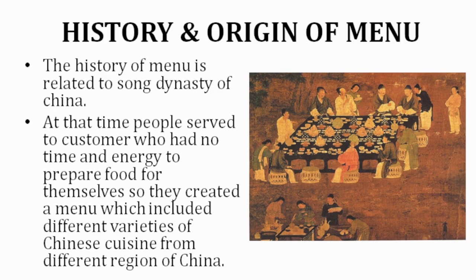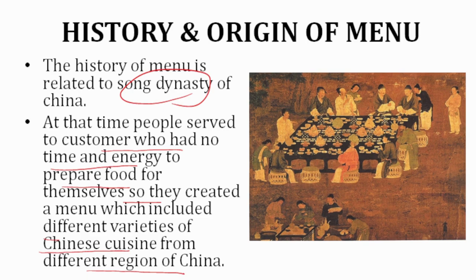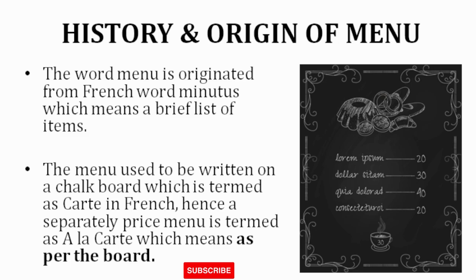The history of menu is related to the Song Dynasty of China. At that time, people served customers who had no time and energy to prepare food because they were busy with their business. They did not have time to prepare food for themselves, so they created a menu which included different varieties of Chinese cuisine from different regions of China, and offered it to those customers who had no time to prepare food for themselves.